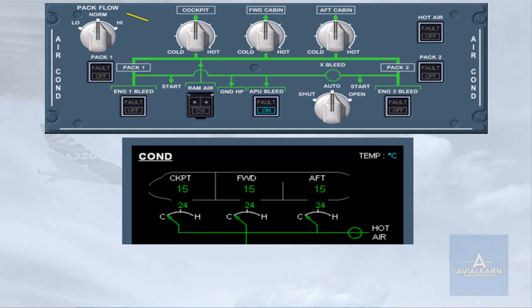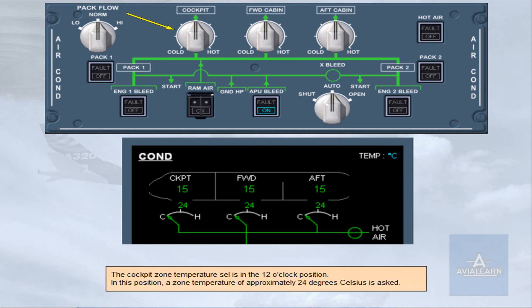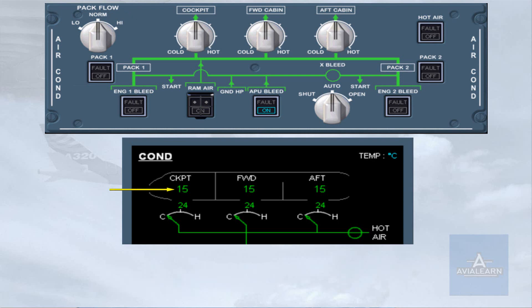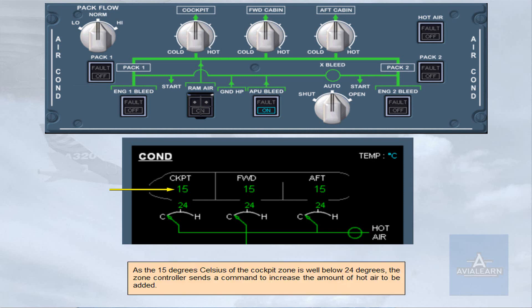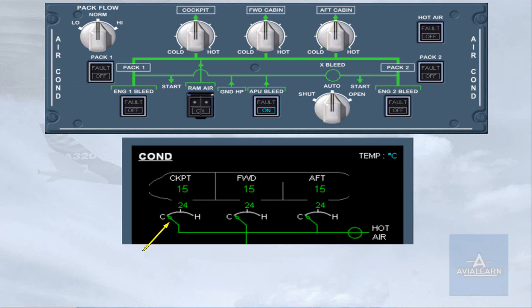The cockpit zone temperature selector is in the 12 o'clock position. In this position, a zone temperature of approximately 24 degrees Celsius is requested. As the 15 degrees Celsius of the cockpit zone is well below 24 degrees, the zone controller sends a command to increase the amount of hot air to be added. Due to this command, the trim air valve opens, the zone duct temperature increases, and warm air is supplied to the cockpit zone, which starts to warm up.